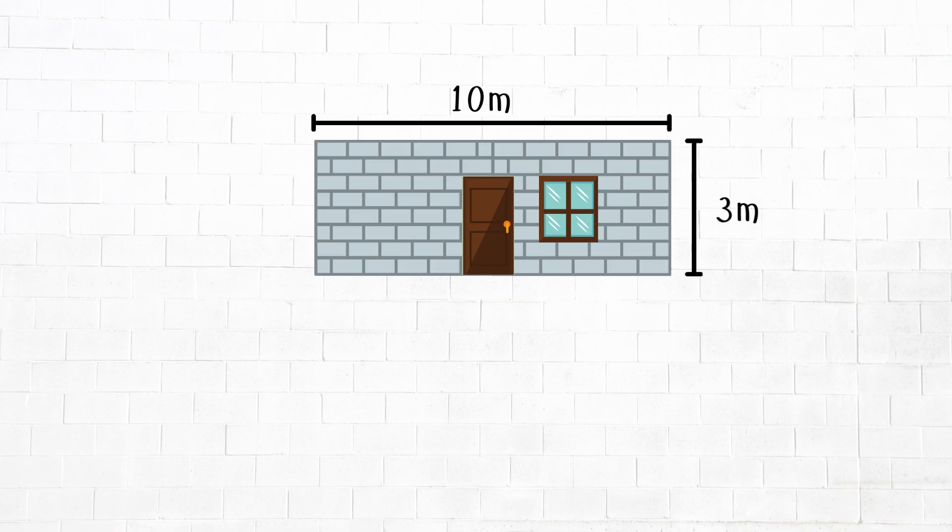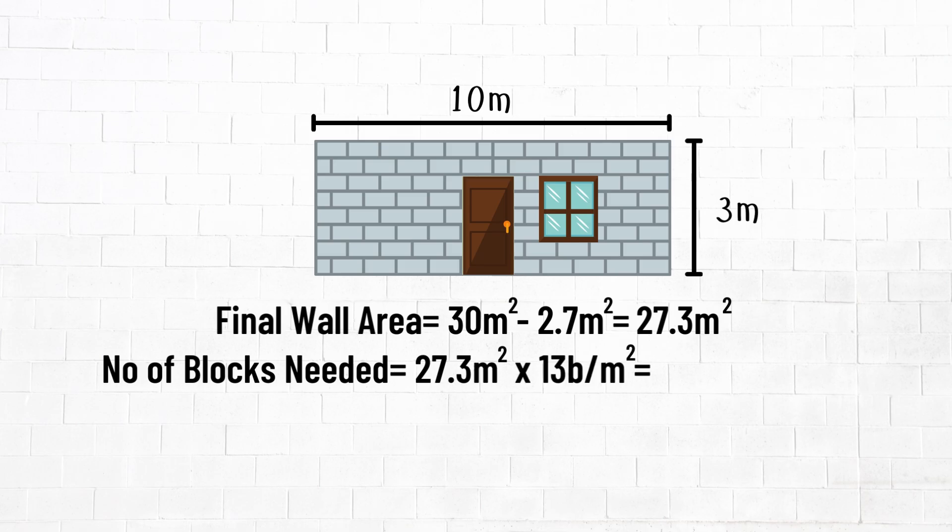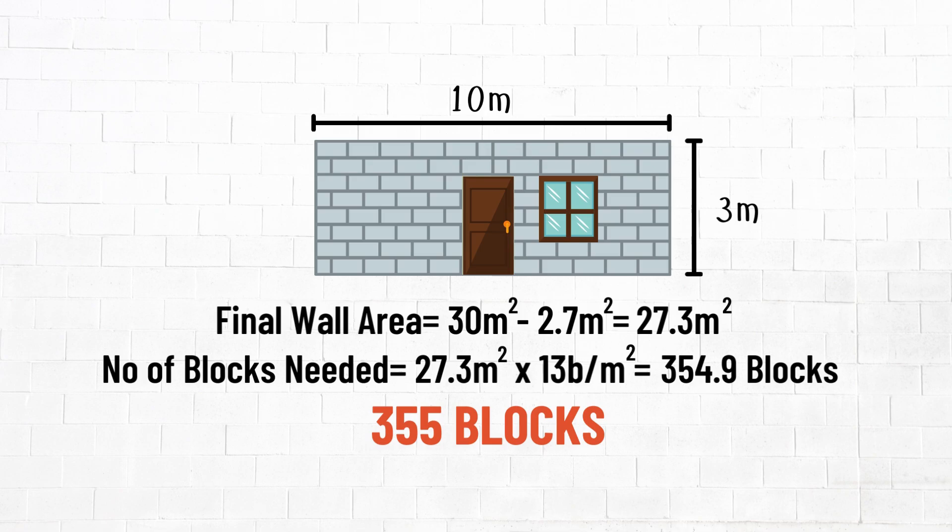So for our 10 meter by 3 meter wall with a door and window, the total area we need to cover with blocks is 30 square meters minus 2.7 square meters, which is equal to 27.3 square meters. The number of blocks we need is then 27.3 times magic number 13, which is equal to 354.9 or 355 blocks rounded up.